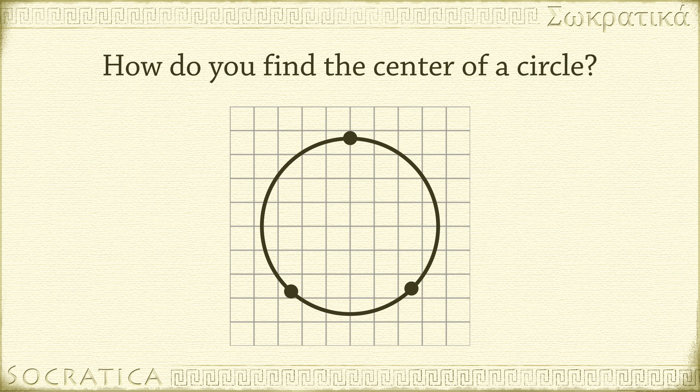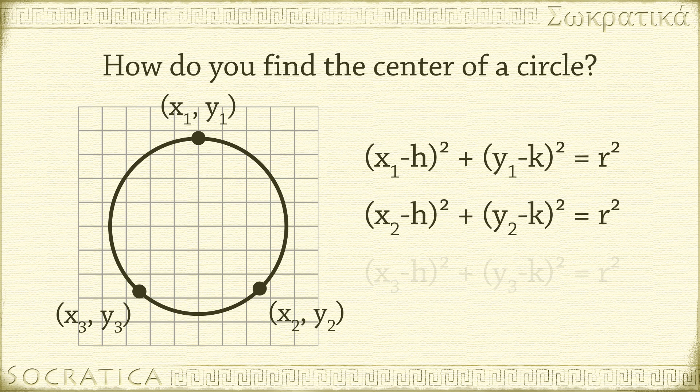In this case, you can find the center of the circle by solving for h, k, and r. To do this, plug the coordinates for each of the three points into the equation of a circle. You now have a system of three equations with three unknowns: h, k, and r.